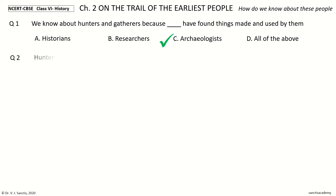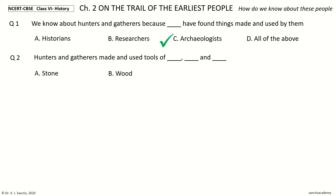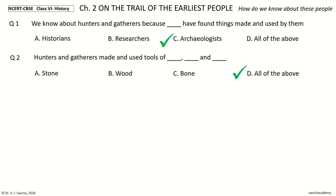Question 2: Hunters and gatherers made and used tools of ___, ___ and ___. The options: stone, wood, bone, all of the above. Your time to choose. And the answer is all of the above.